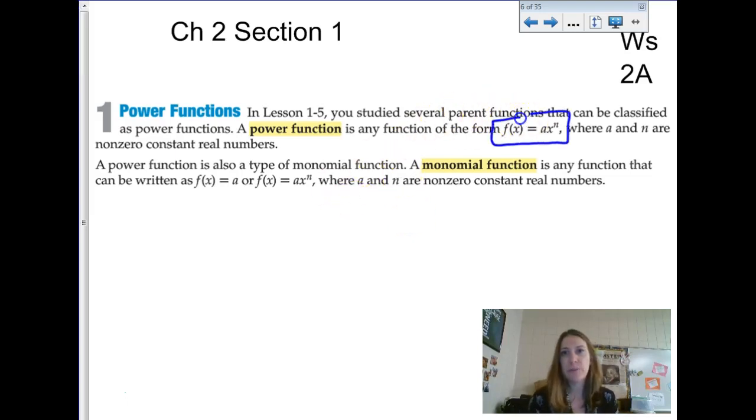This is the official form for power functions that we're going to be using, and then in the near future, we're going to talk about how we can use our calculators for power regressions, and they can come up with a formula if we have, you know, not perfect data we have to estimate using regression. So we also talk about a power function that happens to be a monomial function. That can be written as f(x) equals a for a constant function, or a times x to the n, where a and n are non-zero constant real numbers.